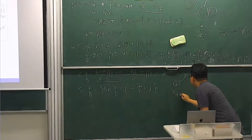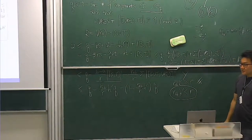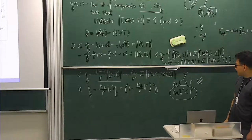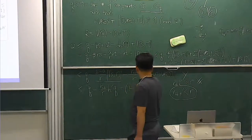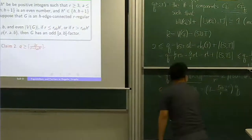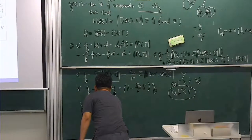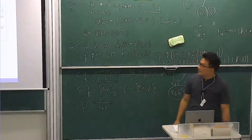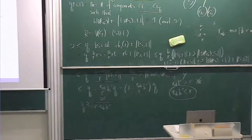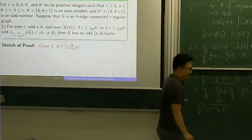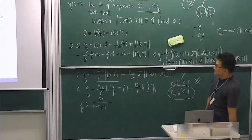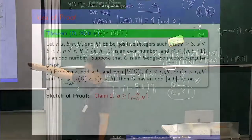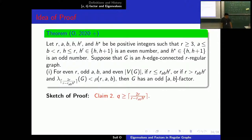From this, if you divide both sides by the appropriate number, you can show that Q is greater than or equal to R minus φ(R,A,B,H prime). So you can see where this number comes from. We have shown that there are at least those many components satisfying that condition in the graph.